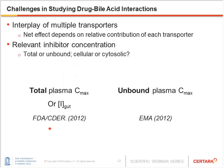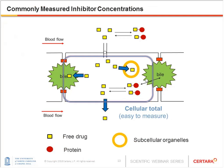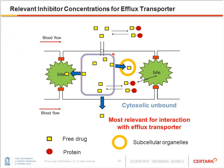The FDA recommends using total plasma Cmax for concentration in the gut, while EMA recommends using unbound plasma Cmax. For hepatic efflux transporters, cellular total concentration seems more relevant than plasma concentration and is relatively easy to measure. However, it includes not only the unbound drug but also drug bound to intracellular proteins and sequestrated into subcellular organelles. In fact, only the unbound drug in the cytosol can interact with efflux transporters, but this type of inhibitor concentration is not routinely measured because of the labor and resource-intensive nature.